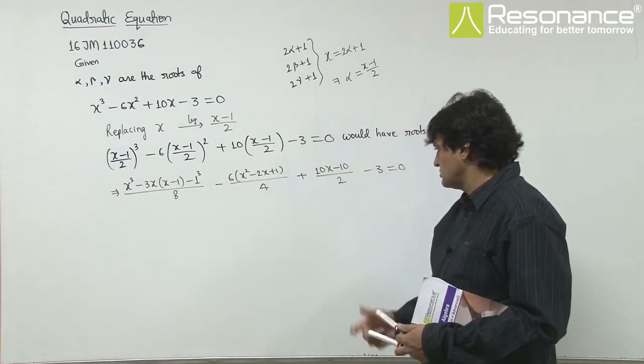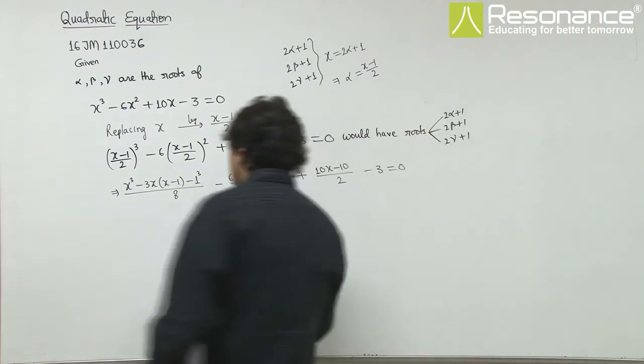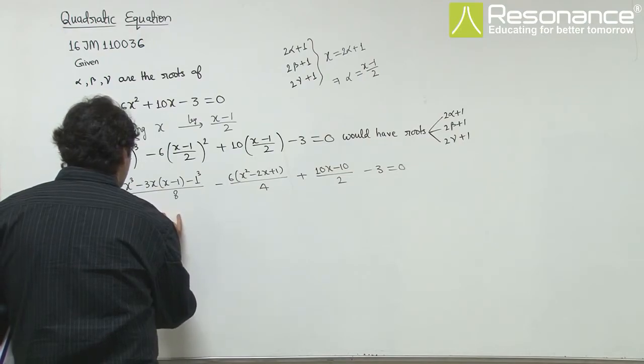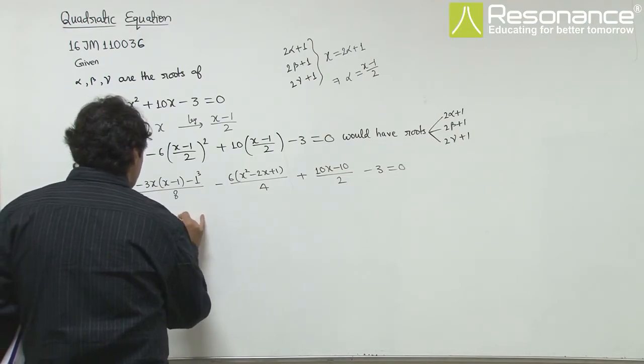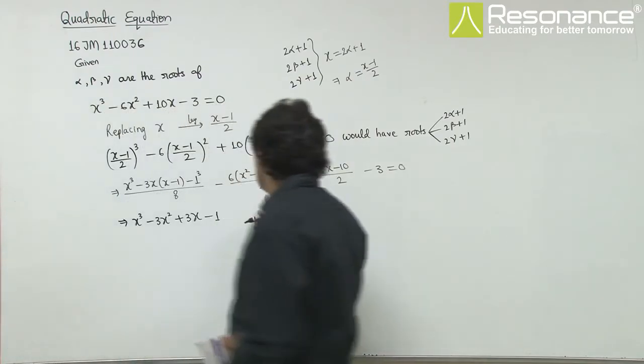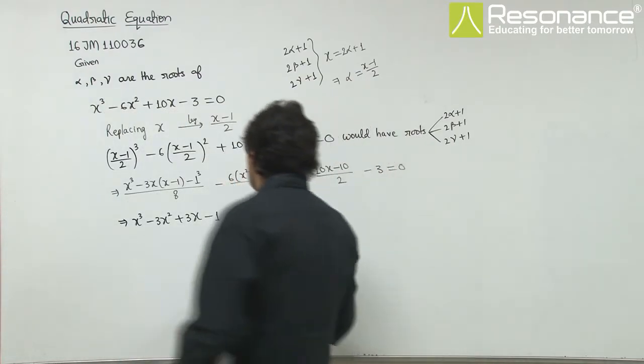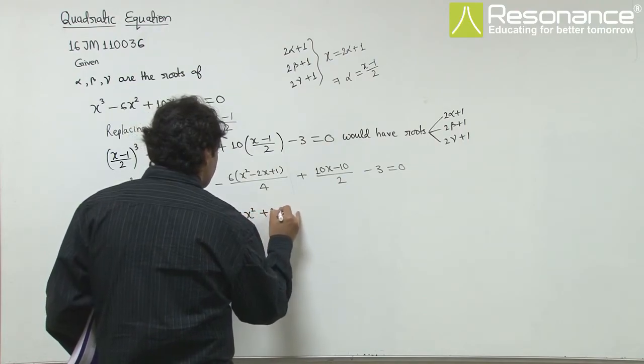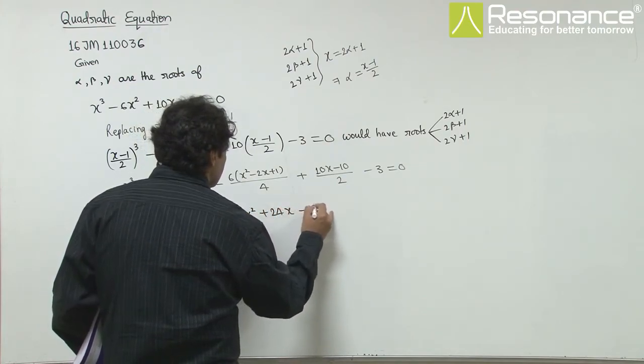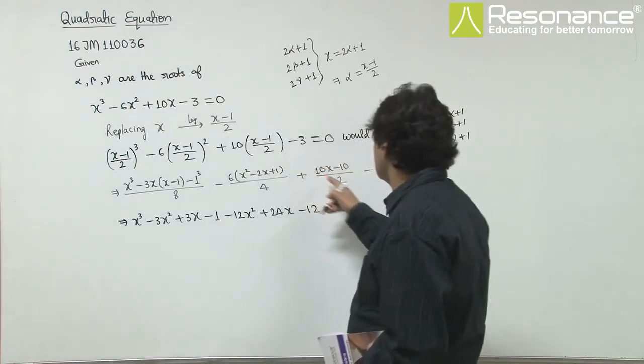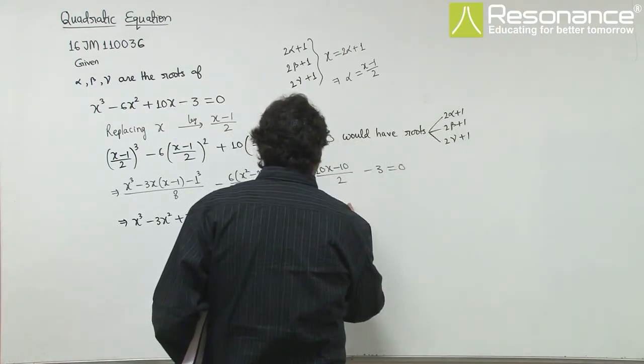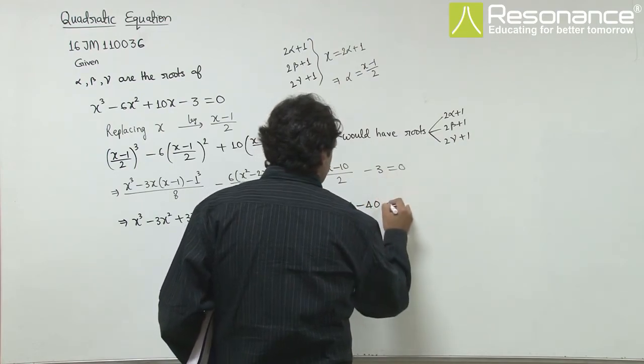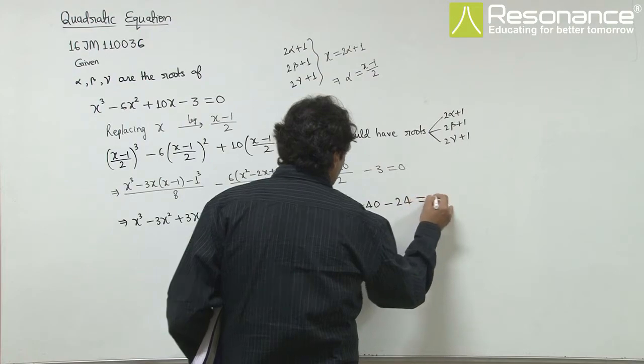Now we have to simplify it, so this will become x³ - 3x² + 3x - 1, this will become 4 times 40 plus 40x minus 40 or 8, this will become minus 24 equal to 0.